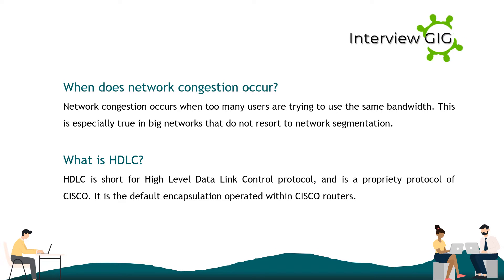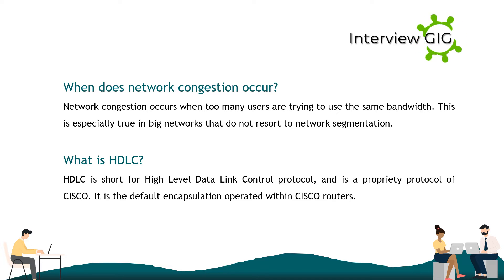When does network congestion occur? Network congestion occurs when too many users are trying to use the same bandwidth. This is especially true in large networks that do not resort to network segmentation.